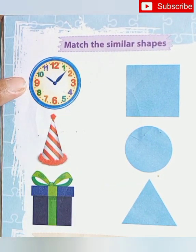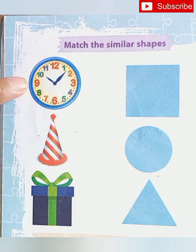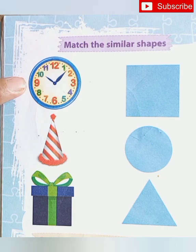You have to find the shapes according to pictures and connect with each other. What is this, Ara? Clock. Clock. Clock. Clock shape is? Circle. Circle. Match with the circle.